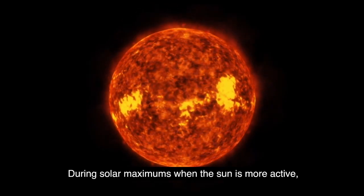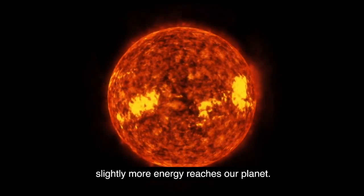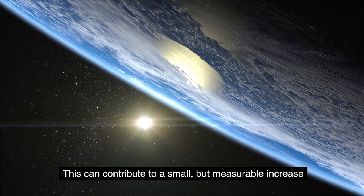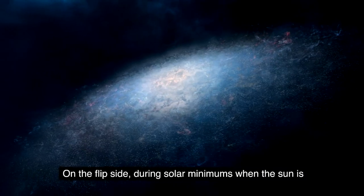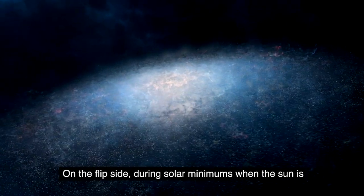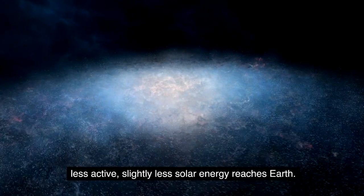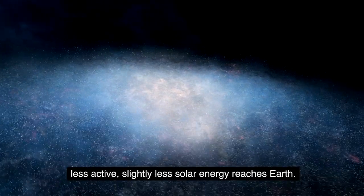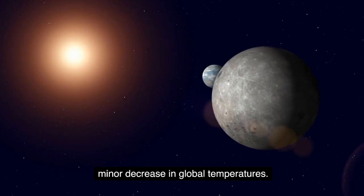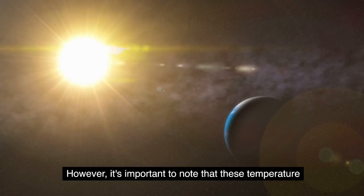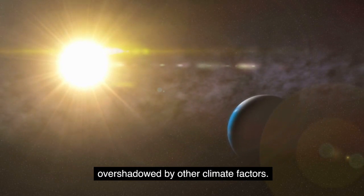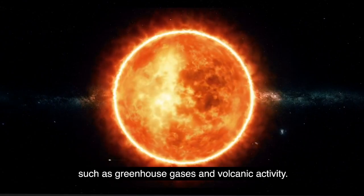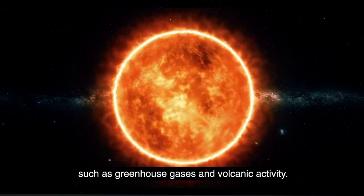During solar maximums when the sun is more active, slightly more energy reaches our planet. This can contribute to a small but measurable increase in global temperatures. On the flip side, during solar minimums, when the sun is less active, slightly less solar energy reaches Earth. This can lead to a minor decrease in global temperatures. However, it's important to note that these temperature changes are relatively small and are often overshadowed by other climate factors, such as greenhouse gases and volcanic activity.